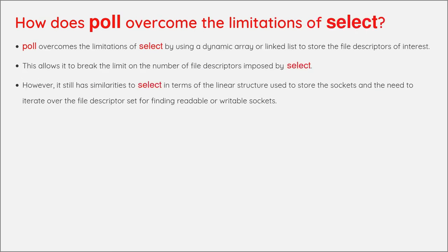How does POLL overcome the limitations of SELECT? POLL overcomes the limitations of SELECT by using a dynamic array or linked list to store the file descriptors of interest, allowing it to break the limit on the number of file descriptors imposed by SELECT. However, it still has similarities to SELECT in terms of the linear structure used to store the sockets and the need to iterate over the file descriptor set for finding readable or writable sockets.